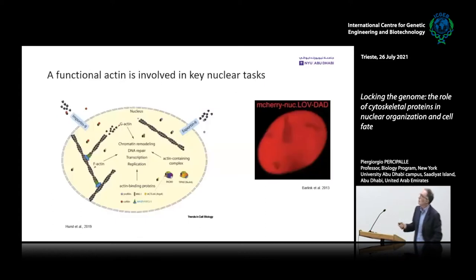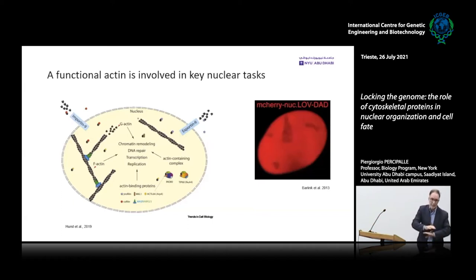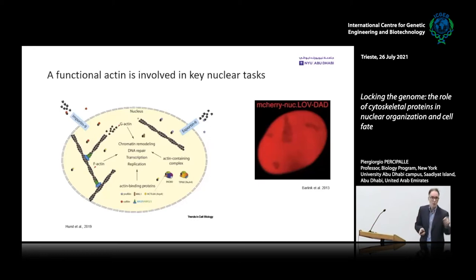The actin in the nucleus is functional — the same as the cytoplasmic fraction. In the cell nucleus there are plenty of actin-regulating proteins important for polymerization and depolymerization. Actin is actively imported into the nucleus through an importin-dependent mechanism in complex with the actin-binding protein cofilin, which has an NLS. It is exported through exportin-6 in complex with profilin, which has a nuclear export signal. There is a very tightly regulated nucleo-cytoplasmic shuttling that impacts gene expression — the more nuclear actin, the higher the transcription level.